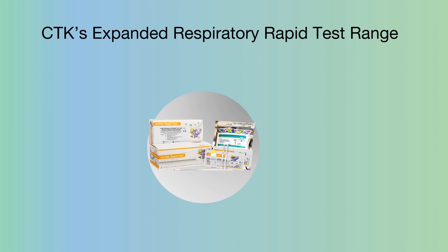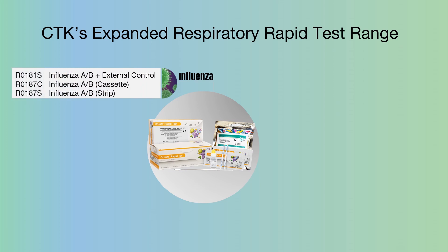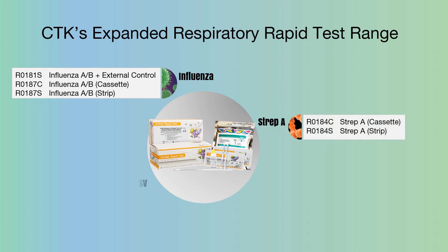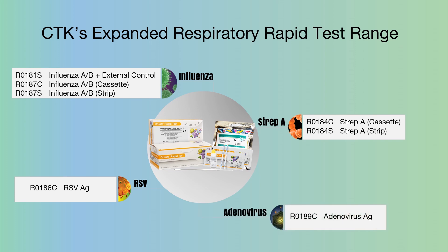With CTK's expanded respiratory range, your patients can take the necessary next steps to protect their children, themselves, and others from a wide variety of respiratory illnesses — using our new on-site Influenza A&B rapid test with Positivia External Control, on-site Influenza A&B rapid test, on-site Strep A rapid test, on-site RSV antigen rapid test, and our on-site adenovirus antigen rapid test.